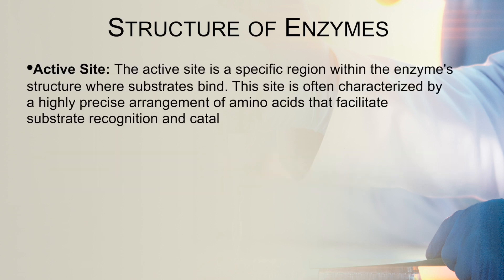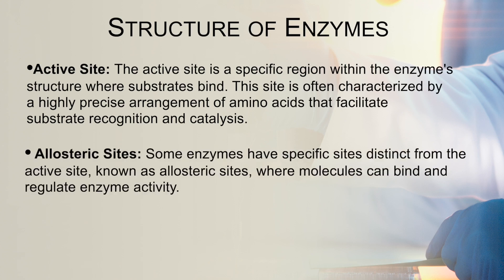There is also a term known as active site. This active site is a specific region within the enzyme structure where substrates bind. This site is often characterized by a highly precise arrangement of amino acids that facilitate substrate recognition and catalysis. Some enzymes also have allosteric sites, which are different from the active site, where molecules can bind and help in regulation of enzyme activity.